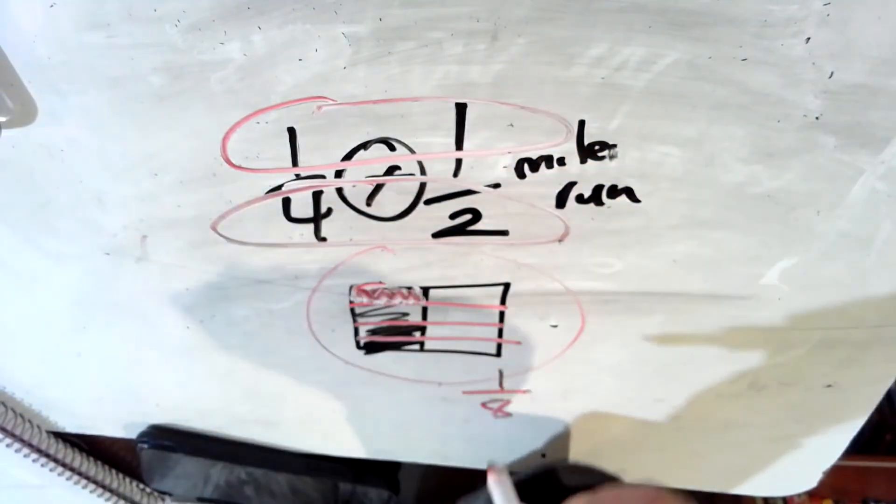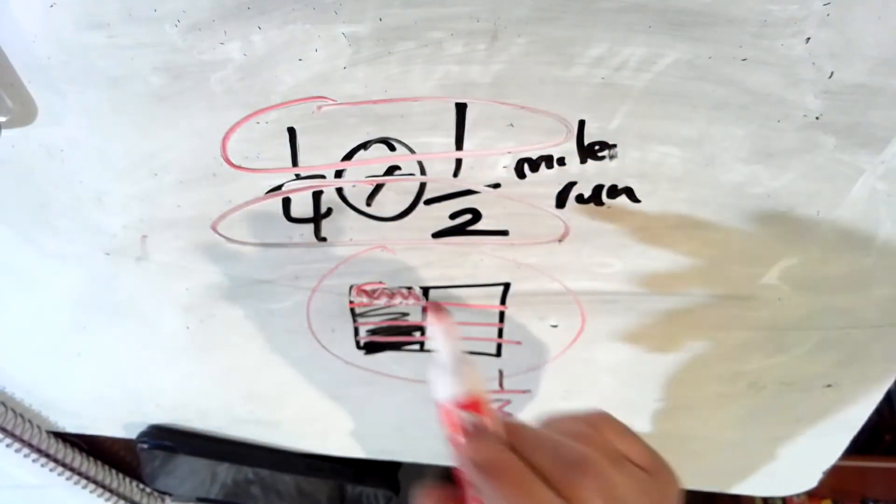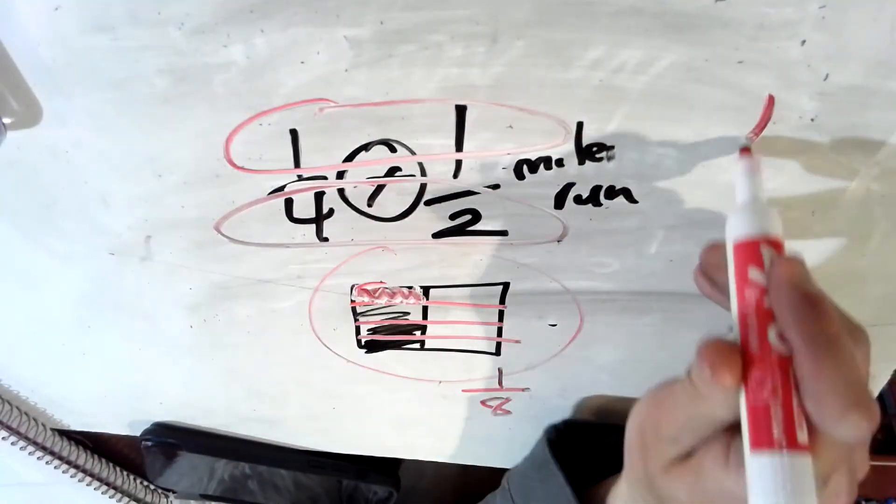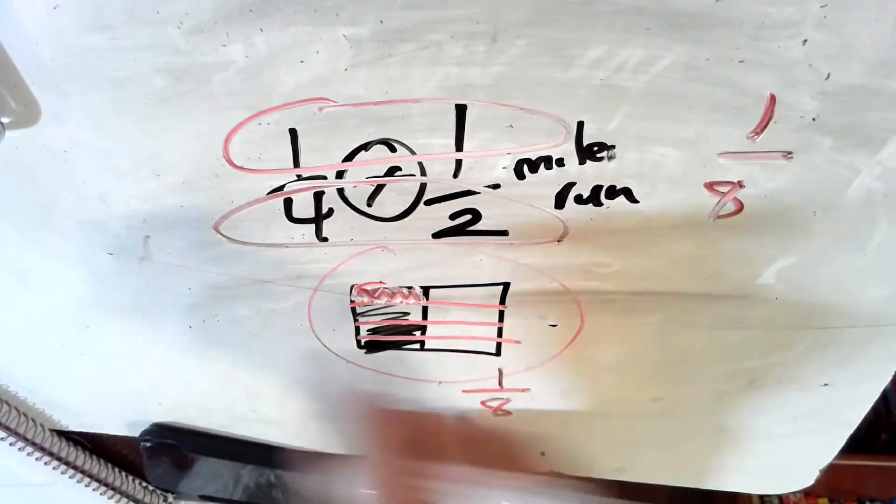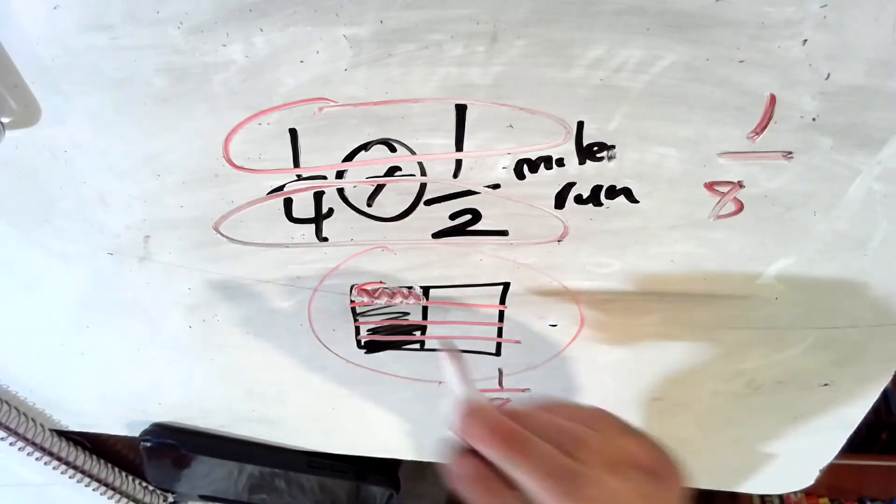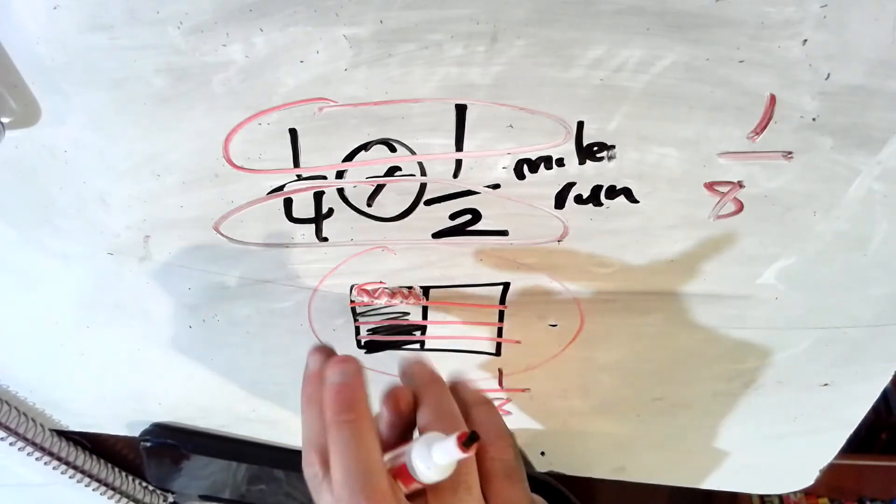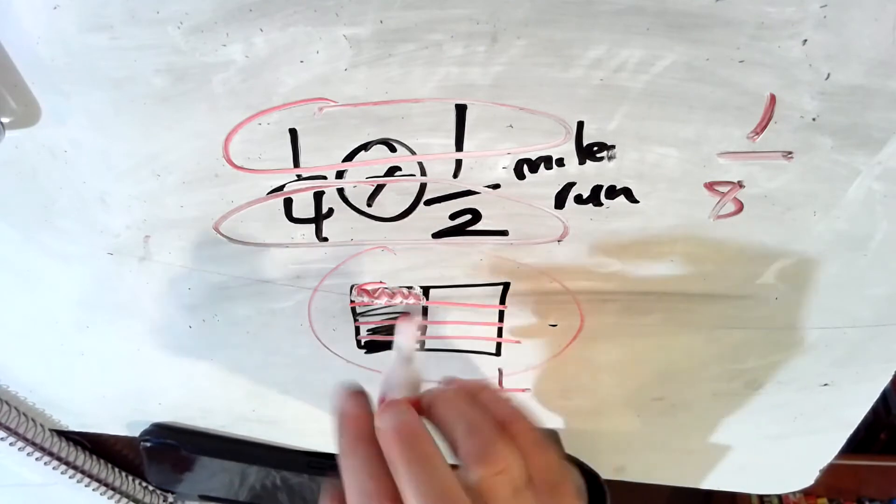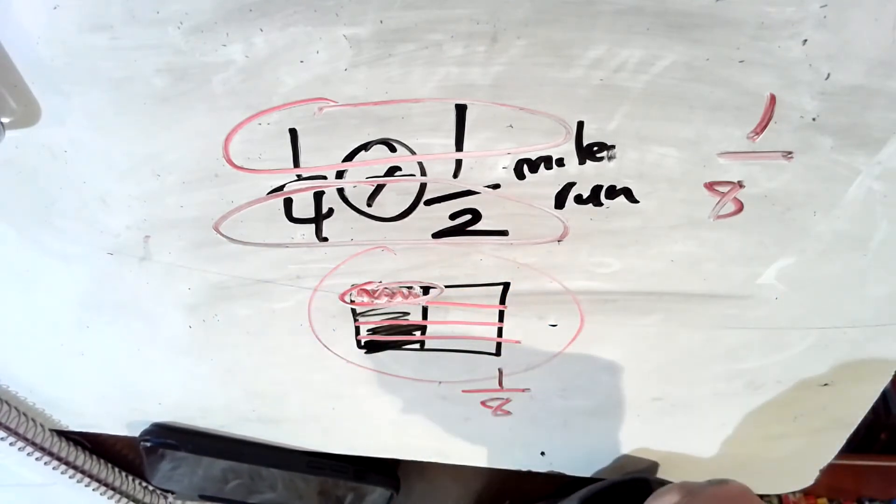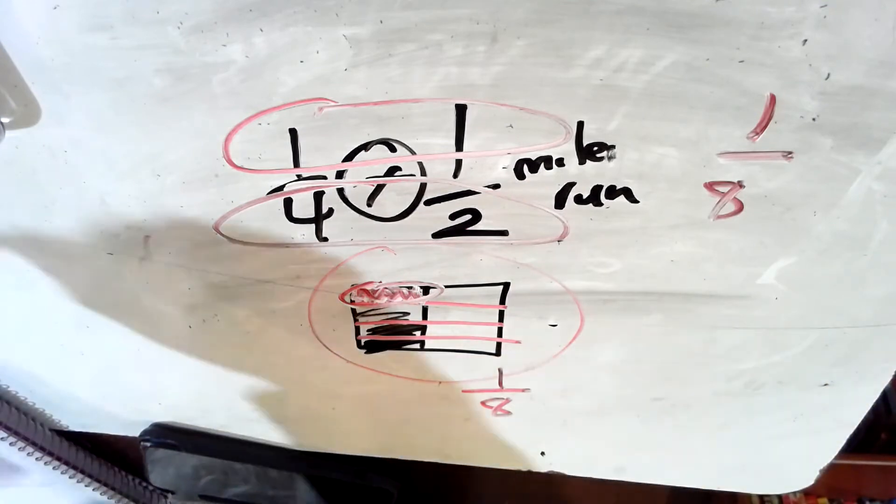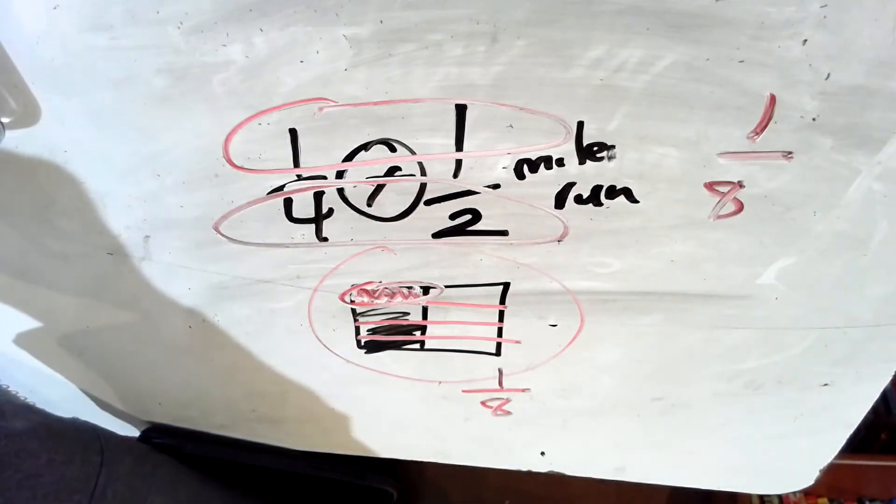We could also multiply across. That's the cheat code. That's the easy way without really understanding why. One times one is one. Four times two is eight. One eighth. You can multiply across, but the best thing conceptually is to understand why. We had one half of a mile. We found one fourth of that half. And we found one eighth is one fourth of one half of a mile.